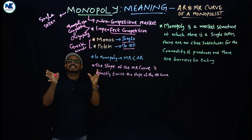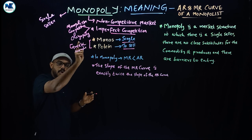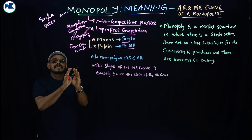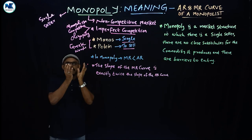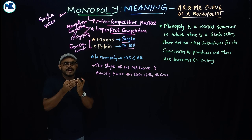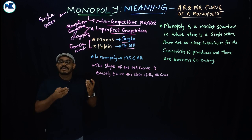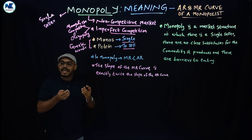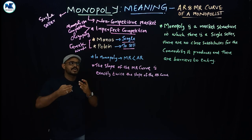The entire market is controlled by the monopoly firm or the monopolist with his unique product, in which there are no close substitutes — that is the key feature of monopoly. In the real world, we can see some extreme cases of monopoly, especially under the government sector, like railways or, in Kerala, the Kerala State Electricity Board.